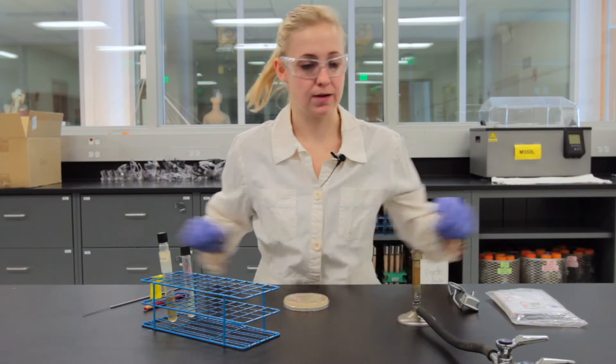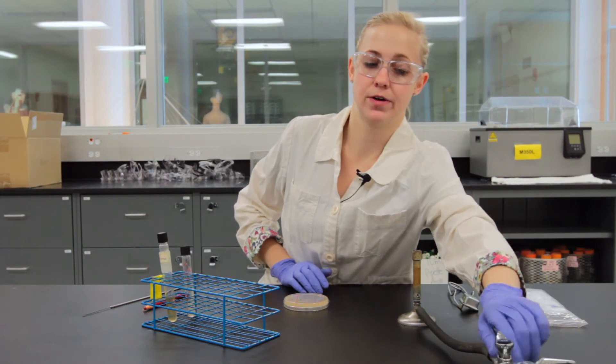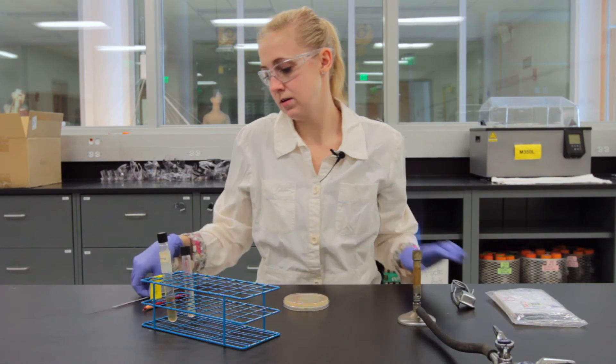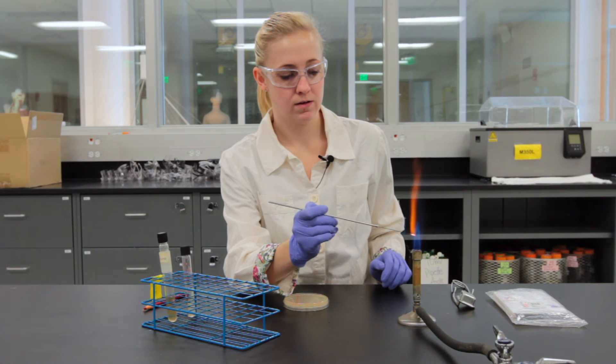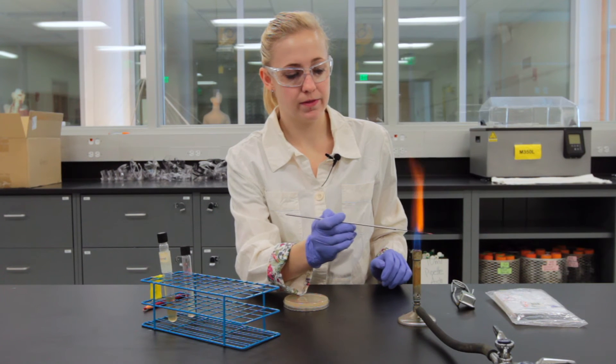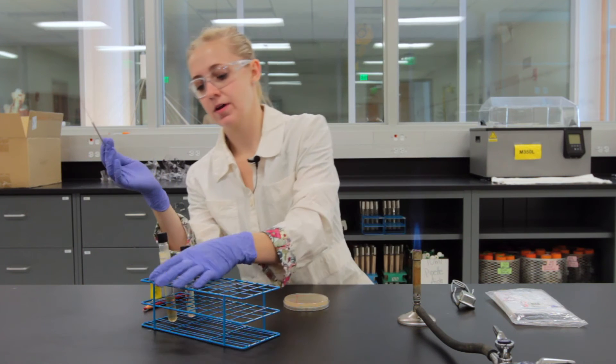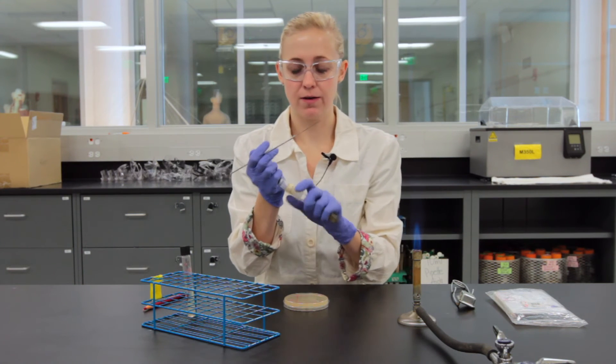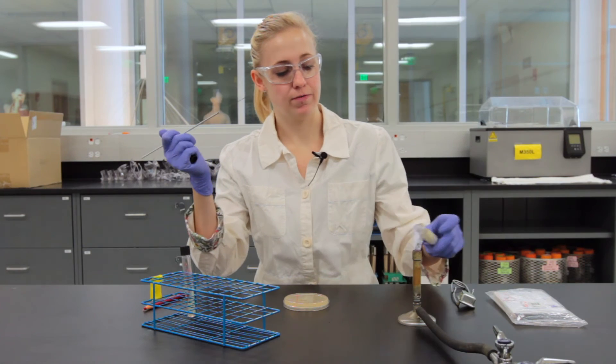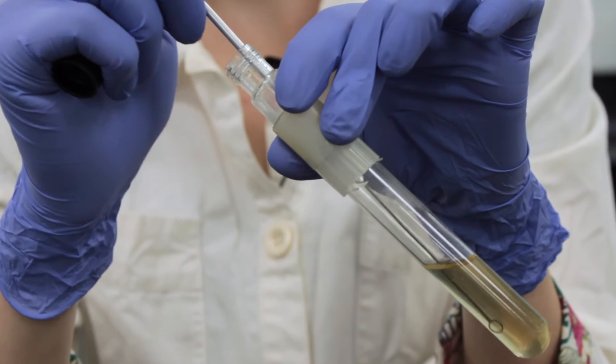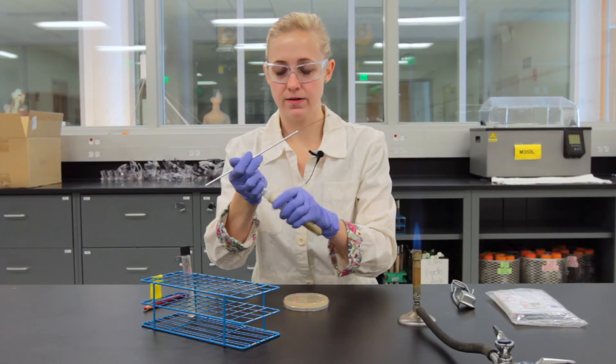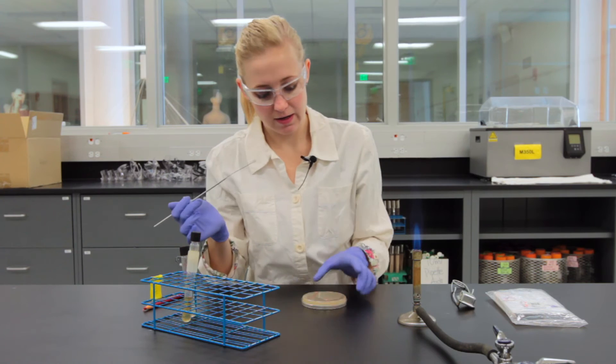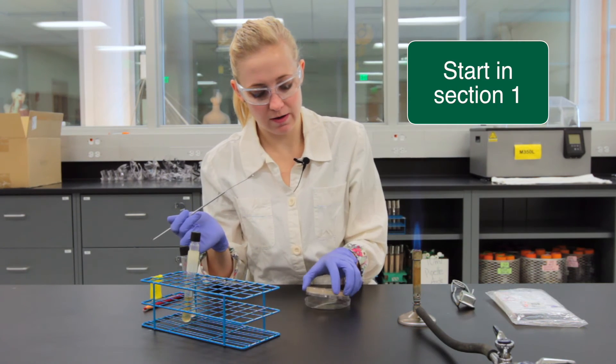So now that I've got my plate labeled I'm going to start the transfer. I'll turn my Bunsen burner on flame my loop making sure it's red hot from the loop to a little bit up. Then I'll grab my bacterial culture again with my left hand taking the cap off with my right I'll flame the opening my loop is cooled down a little bit stick it in there grab some bacteria flame put the cap back on then starting in section one with the plate I'll streak it back and forth all the way down to the line.